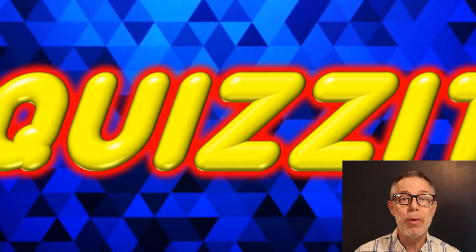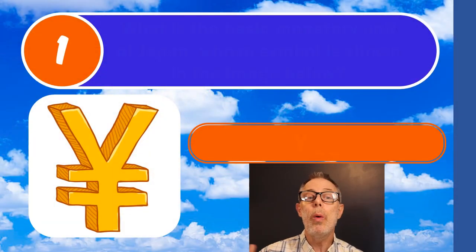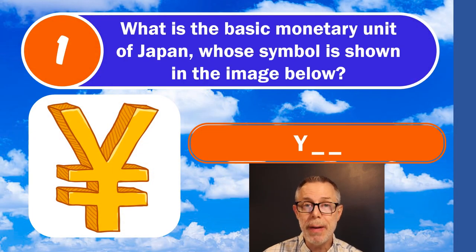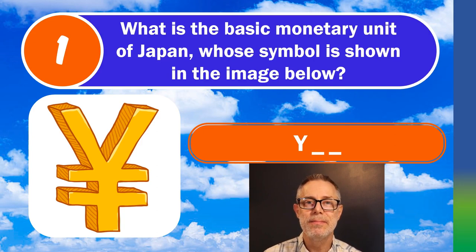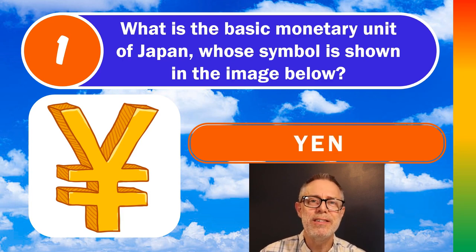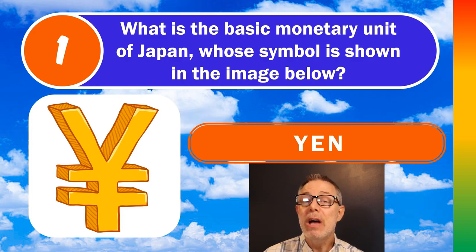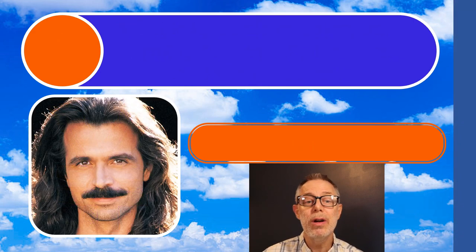Let's get into question number one, and today's quiz is not too tough. What is the basic monetary unit of Japan whose symbol you see here? The answer is Yen. I said this one is kind of easy — they're all fairly simple if you know the answers, but I think you're going to get a lot of them right today. Let's move on to question number two.